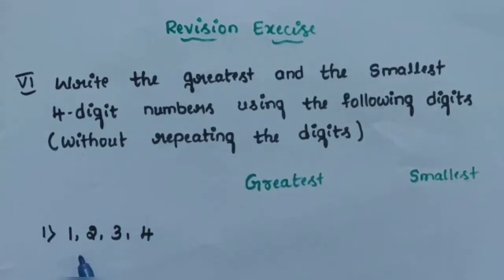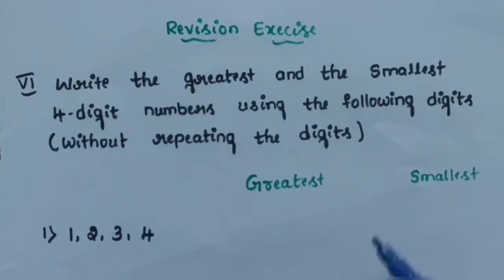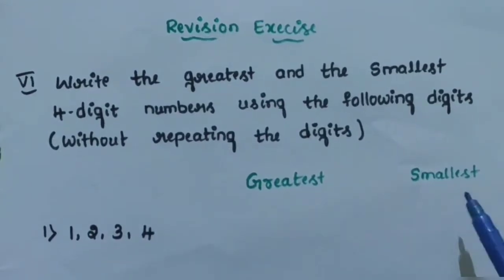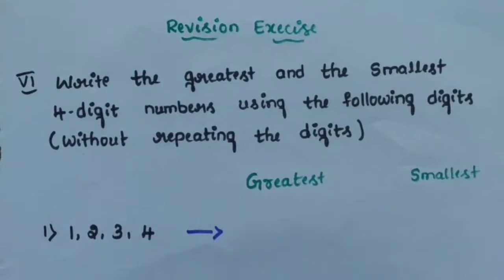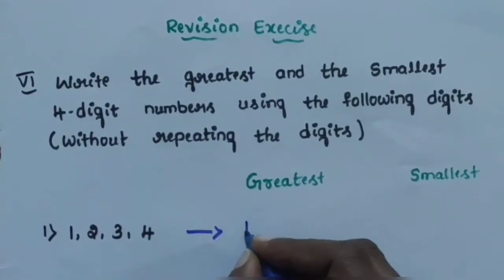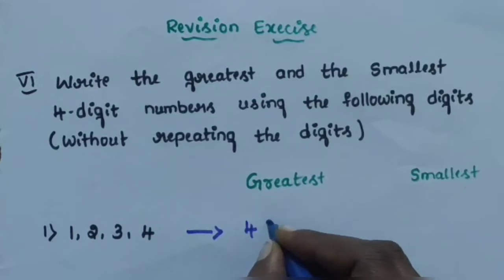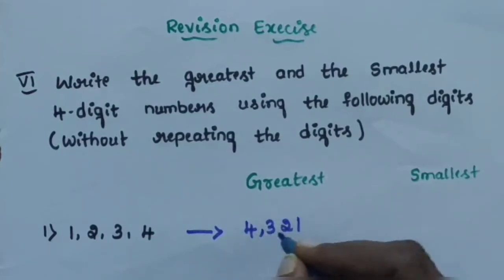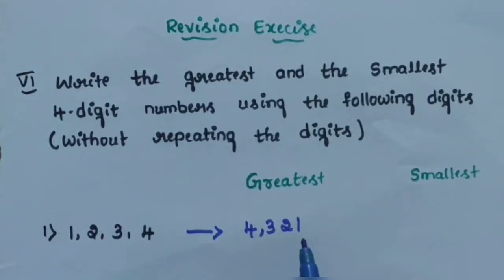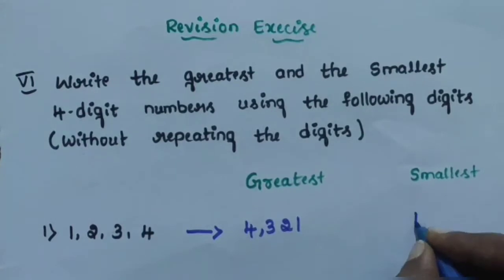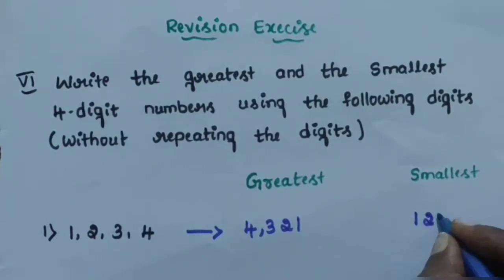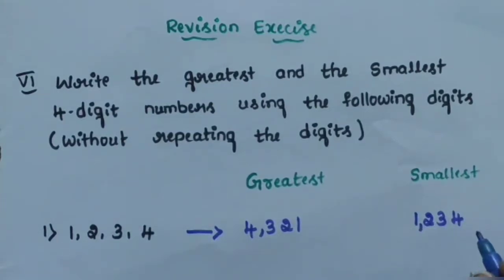Question number 1: using the digits 1, 2, 3, 4 without repeating, write the greatest and smallest 4-digit numbers. For the greatest number, arrange in descending order: 4, 3, 2, 1 — that gives 4,321. For the smallest number, arrange in ascending order: 1, 2, 3, 4 — that gives 1,234.